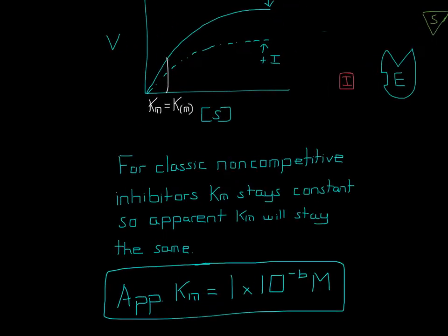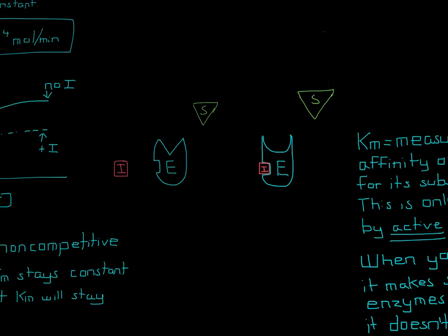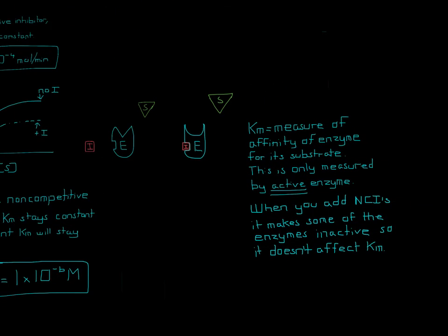Let's explain why. A typical non-competitive graph shows that Km equals the apparent Km, but Vmax has decreased. For competitive inhibition, the inhibitor binds to the active site. For non-competitive inhibition, it binds to a site other than where the substrate binds. When the inhibitor binds at a different site, it changes the shape of the substrate binding spot so the substrate can no longer bind — effectively making the enzyme inactive.